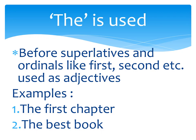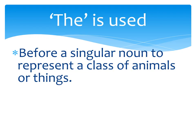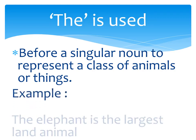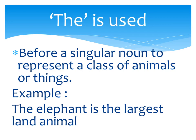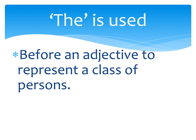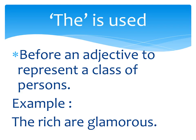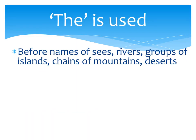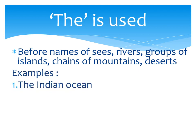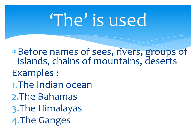Use number seven: before a singular noun to represent a class of animals or things. For example, 'the elephant is the largest land animal.' Use number eight: before an adjective to represent a class of persons. For example, 'the rich are glamorous' — here we are talking about all people who are rich. Use number nine: before names of seas, rivers, groups of islands, chains of mountains, and deserts. For example, the Indian Ocean, the Bahamas, the Himalayas, the Ganges.